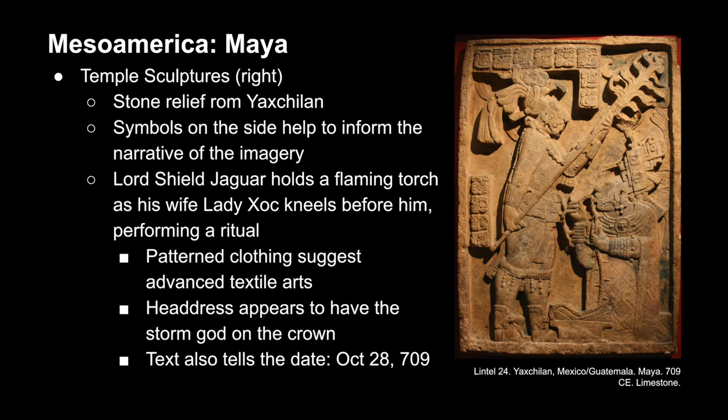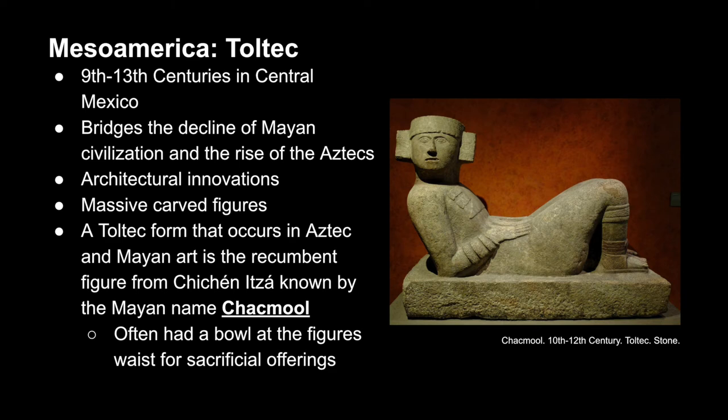The Toltec culture developed in central Mexico between the 9th and 13th centuries, creating a bridge between the decline of the Mayan and the rise of the Aztec civilization. In this time period they created many innovations within architecture and massive carved figures. From the Mayan city Chichen Itza, we see the recumbent — or reclining, leaning back — figure called the chakmul. This figure often had a bowl at the waist that was used for sacrificial offerings, and while it was a Toltec form, it often occurred in both Mayan and Aztec art.